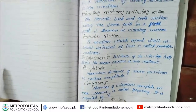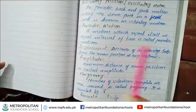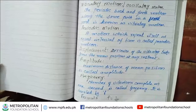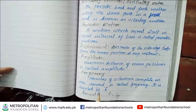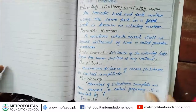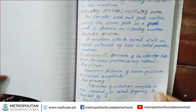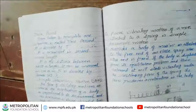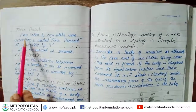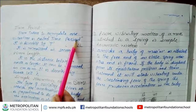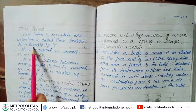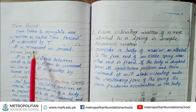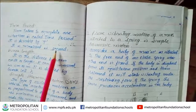One complete vibration per second is called frequency. Time period is the time taken to complete one vibration. It is denoted by T and is measured in seconds.